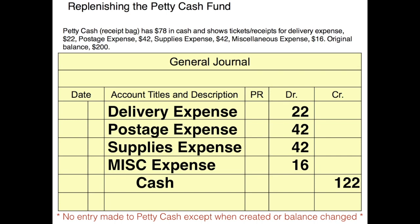What I want you to note here is there is no entry in this journal entry made to petty cash. The only time you will see a journal entry made to petty cash is when you create it, or if you ever change the balance that's in it. We credit cash — we do not credit petty cash. Keep that in mind; it's an impressed system.